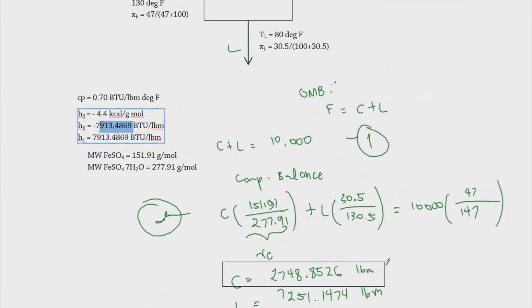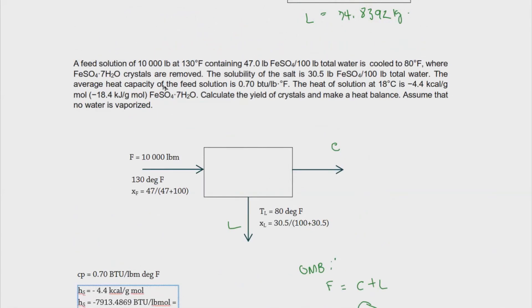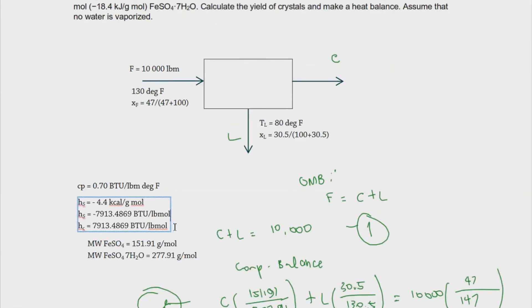The heat of crystallization needs to be in BTU per pound mass rather than BTU per pound mole. We convert by multiplying by 1 over 277.91 pound mole per pound mass (the MW of FeSO4·7H2O). This gives a heat of crystallization of 28.4750 BTU per pound mass.